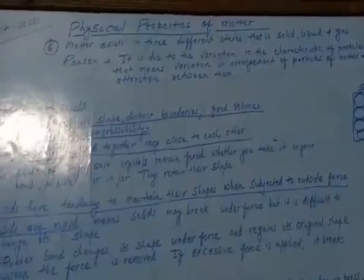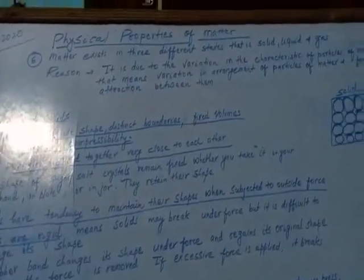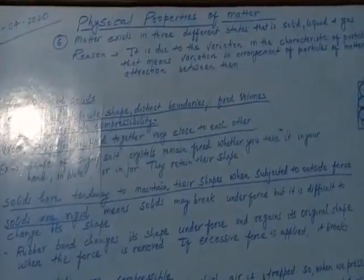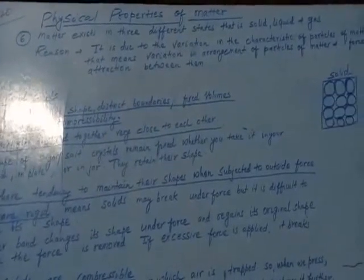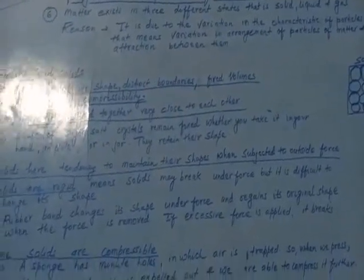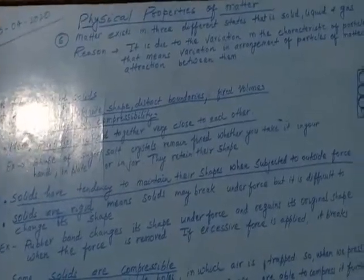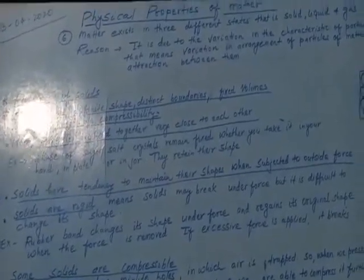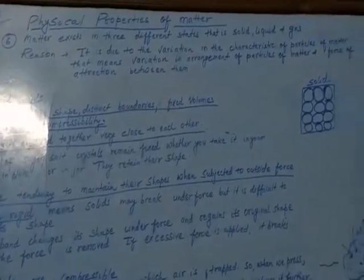So students, your next physical property of matter is that matter exists in 3 different states: solid, liquid, and gas. Now what is the reason matter shows 3 different states? It is due to the variation in the characteristics of particles of matter.